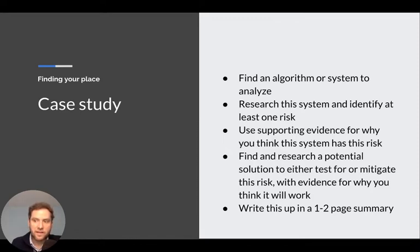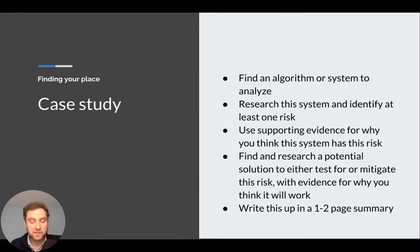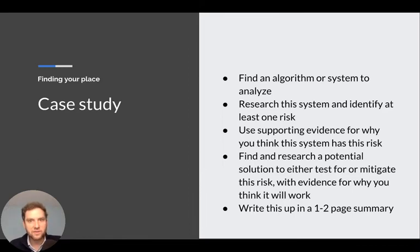If the algorithm has had problems in the past, I don't want you to focus on those problems — I want you to look beyond that. Research the system and identify at least one risk. This could be a reputational risk, a compliance risk, a safety risk, or more interestingly an ethical risk. Identify at least one risk due to the use of this system — whether it's the system itself, some sort of bias, or some misuse. Use supporting evidence for why you think this system has that risk.